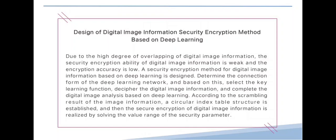We determine the connection form of the deep learning network and, based on this, select the key learning function. We decipher the digital image information and complete the digital image analysis based on deep learning. According to the scrambling result of the image information, a circular index table structure is established, and then the secure encryption of digital image information is realized by solving the value range of the security parameter.